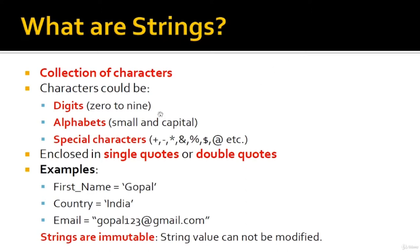Strings are enclosed in single quotes or double quotes. For example, first_name = 'Gopal' — here Gopal is a string containing only alphabets enclosed in single quotes. Second, country = 'India', also enclosed in single quotes. Third, email = "Gopal123@gmail.com" — this string contains alphabets, digits 123, and special characters like at-the-rate and dot. So all three are examples of strings.